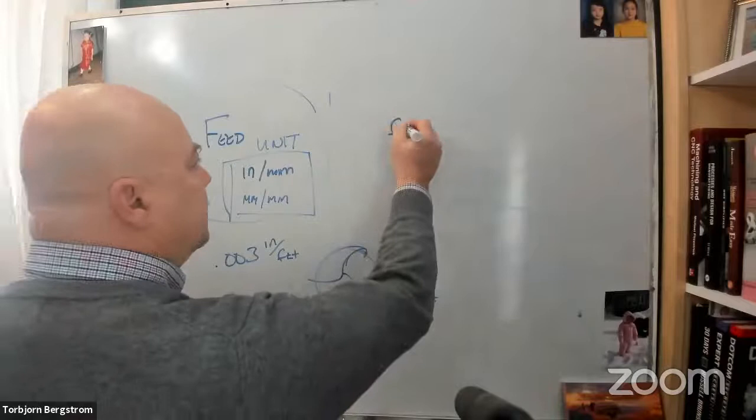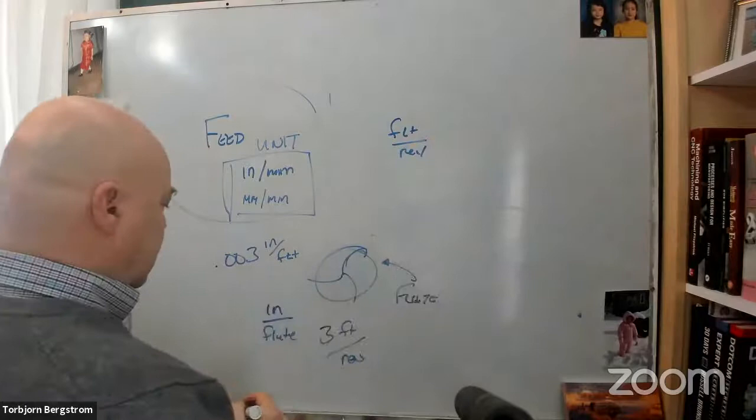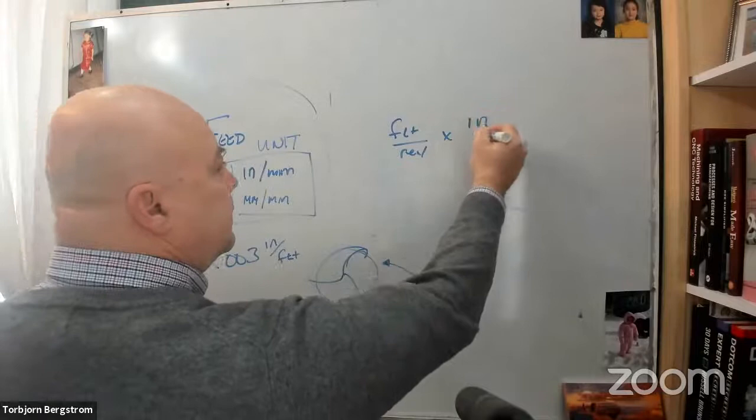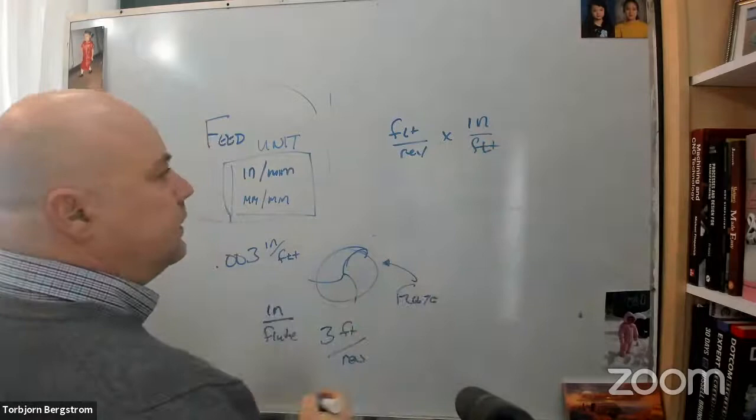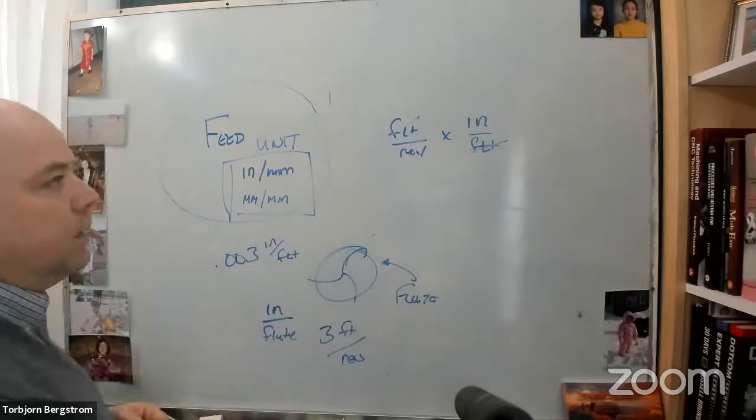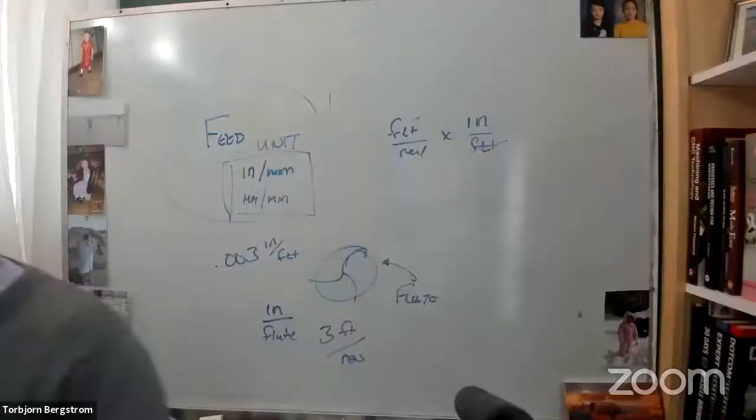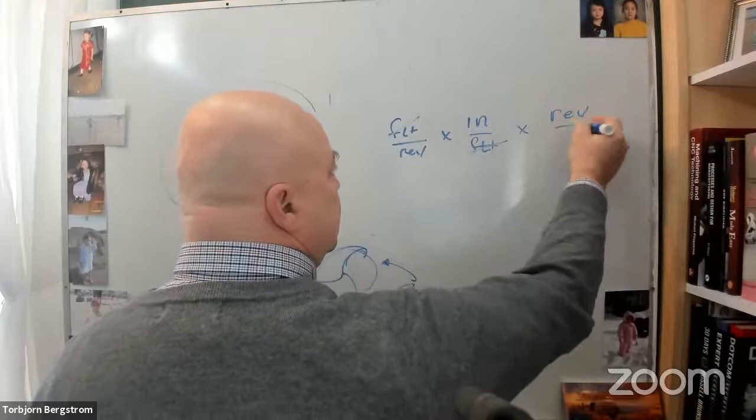We'd have to do unit conversion. So we'd have to do flute per revolution. We could multiply by inches per flute. And that would give us inches per revolution. Then what else do we need to know? Revolutions per minute. And then the revs go away, and we get inches per minute.